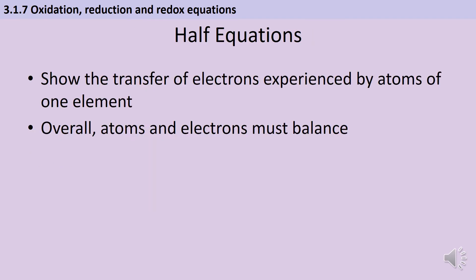At GCSE we introduced the idea of half equations, particularly when studying electrolysis but also for some chemical reactions. A half equation is very similar to a full chemical symbol equation but it just shows the transfer of electrons experienced by the atoms of one element. It's almost like we've taken a symbol equation and cut it in half and shown where the electrons are moving inside it.